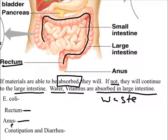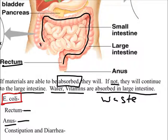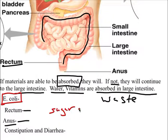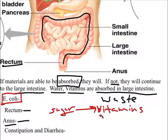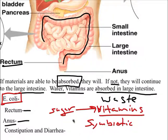The rectum holds waste until you feel the need to use the restroom, and then waste is expelled through the anus. Also worth noting: a bacteria called E. coli lives in our large intestines — every human on the planet has E. coli there. We give them sugars we can't break down as food, and they make us vitamins in return. That's a symbiotic relationship.